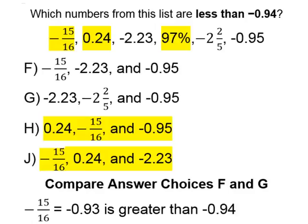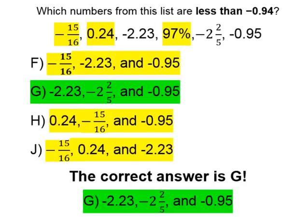When dealing with negative numbers, the larger the absolute value, the smaller the number. Negative point nine three is actually greater than negative point nine four, because point nine four is a bigger absolute value and the negative sign makes it smaller. So any answer choice that has negative fifteen over sixteen in it, we can cross that out as well, because negative point nine three is greater than negative point nine four — and we are looking for numbers less than negative point nine four.